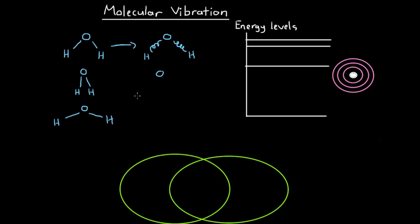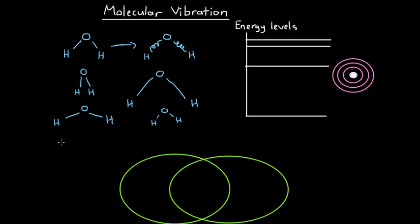We can also have the same shape but bigger, or on the other hand, nice and small. These are all the molecular vibration energy levels that the water molecule can take. There are lots of others, but these give a general idea of what we mean when we talk about molecular vibration — the different ways we can visualize the vibration of a molecule. The words we use are bending and stretching.